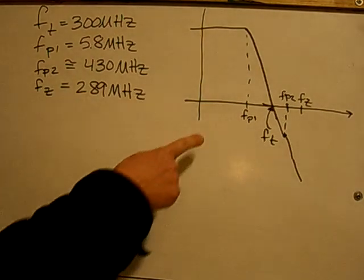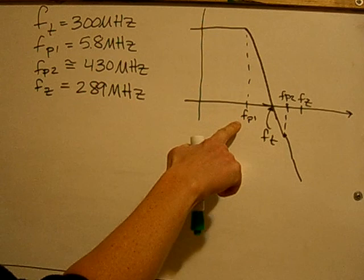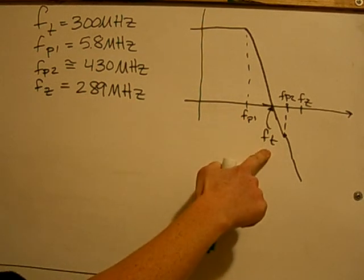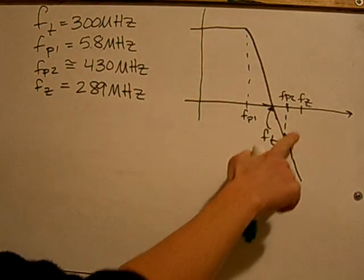This is typically what you want to have to have a stable system. You want FP1 to be the cut-off frequency for the two-stage op-amp. FT will then cross before FP2 and FZ.